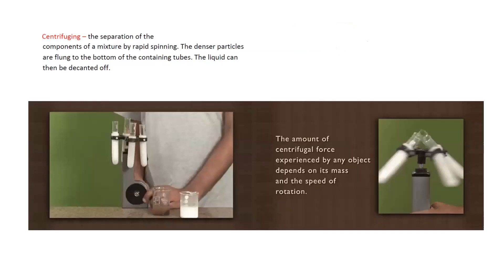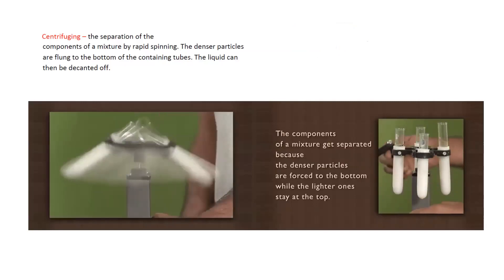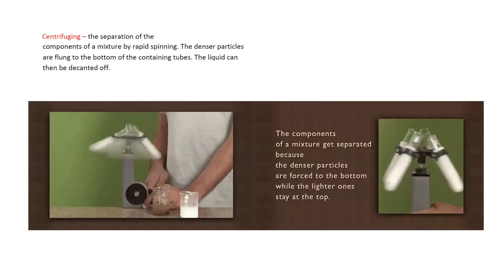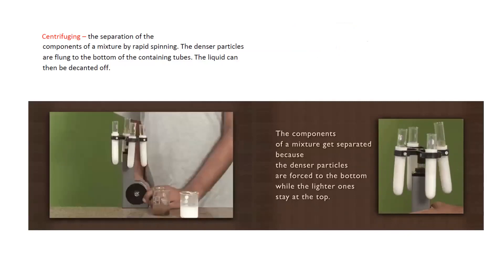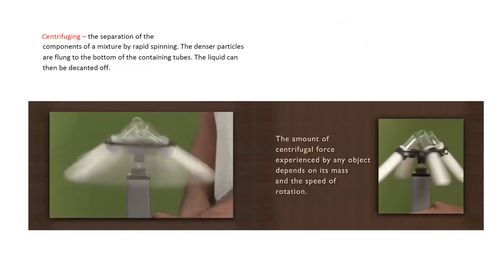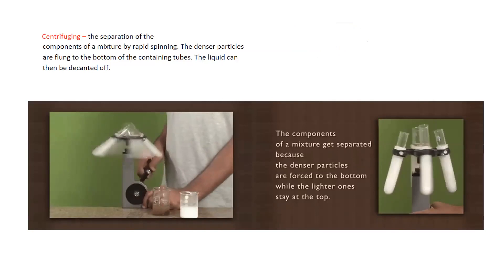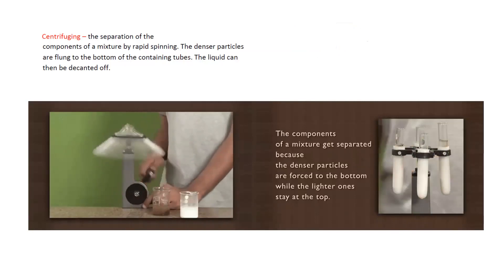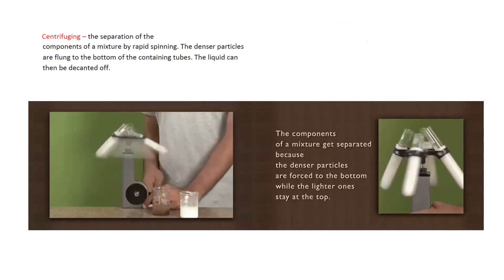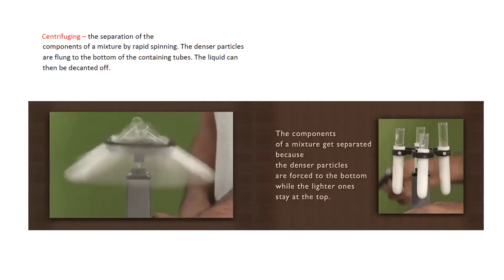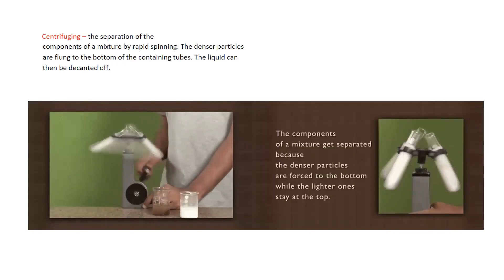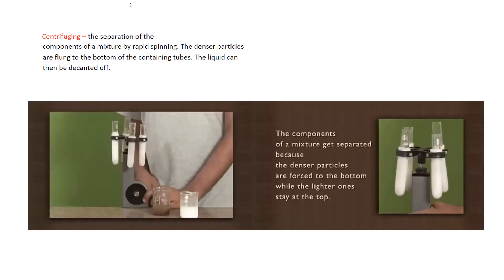If you want to separate very fine or very small insoluble particles from the mixture, we can use centrifuging. In centrifuging, we move the contents in a tube at very high speed so the particles experience force and move to one end of the tube, separating from the liquid. We can then use decanting or filtration to separate them. This technique is used for very fine particles which remain suspended and do not settle down quickly.